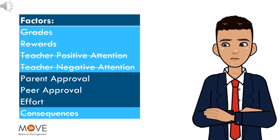If those strategies are removed, Billy might make a different decision about whether or not to follow the rule. In this example, all that would be left is parent approval, peer approval, and effort — all things that vary greatly among students, and all things out of our control.